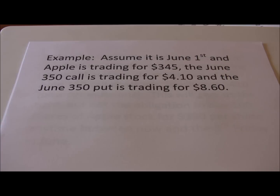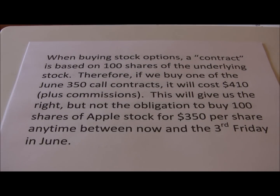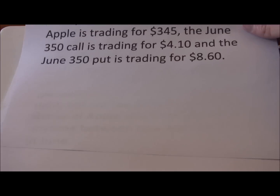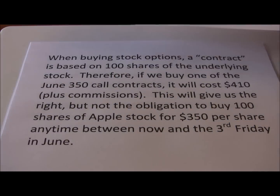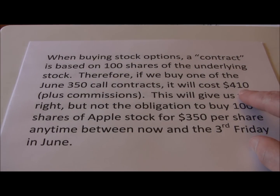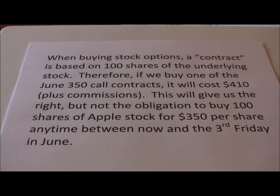The June 350 put gives us the right but not the obligation to sell Apple stock for $350 per share. We're currently willing to pay $8.60 per share to do that. When buying stock options, a contract is based on 100 shares of the underlying stock. Therefore if we buy one of the June 350 call options it's going to cost us $410 — the price of the individual call option was $4.10, and since we're buying a contract on 100 shares, we multiply $4.10 by 100, giving us $410.